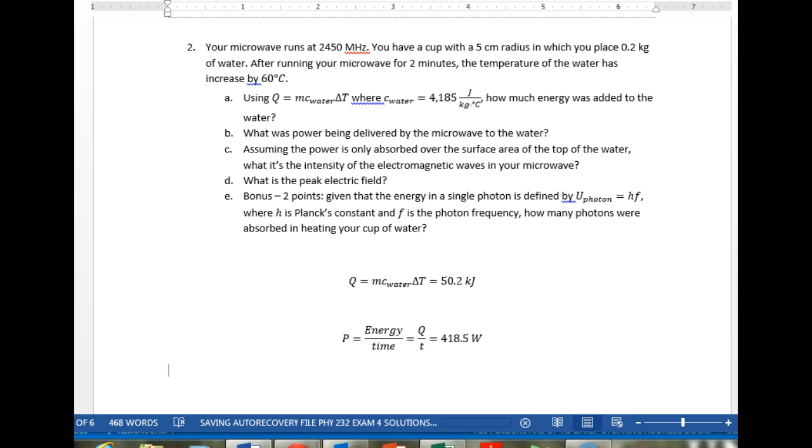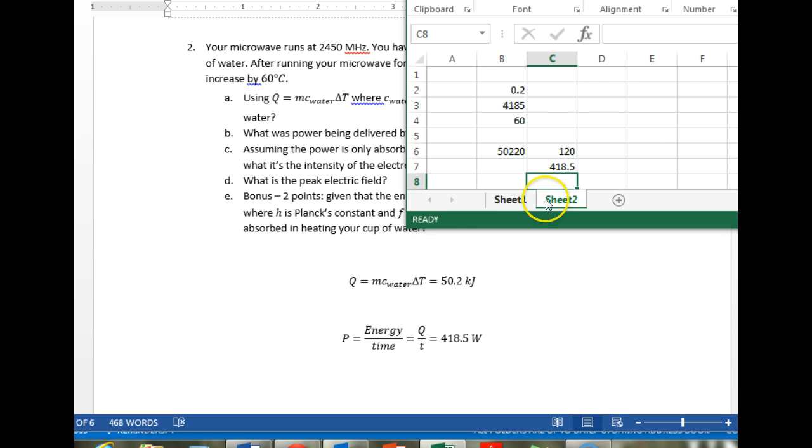Assuming the power is only absorbed over the surface area of the top of the water, what is the intensity of electromagnetic waves in your microwave? Surface area over the top of the water. We have a radius, 5 centimeters, or 0.05 meters, which means we have an area of pi times the radius squared. So our area is 0.007854 square meters.